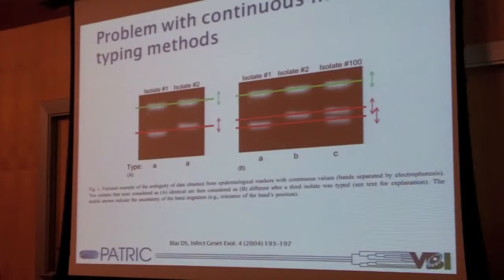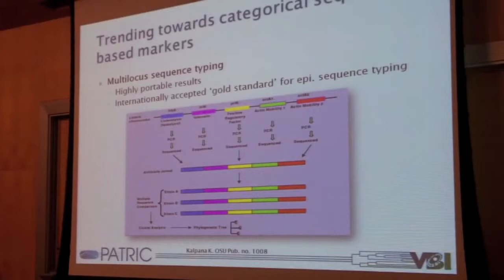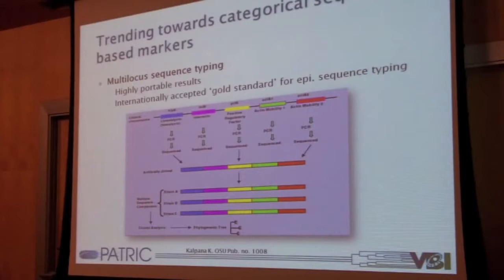Given this, there's been a trend toward using more sequence-based markers that are categorical in nature, such that results can be shared between institutions and between countries. By far the most popular of these typing methods has been multi-locus sequence typing, or MLST. It's been touted as the gold standard for international portable pathogen subtyping for epidemiological purposes. Basically, you sequence about five to eight housekeeping genes depending on the pathogen. Each gene variant is assigned a different number, and when those number combinations are put together, that makes up the profile for that MLST sequence type.